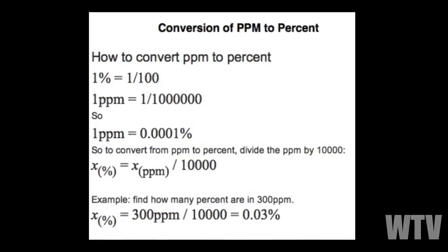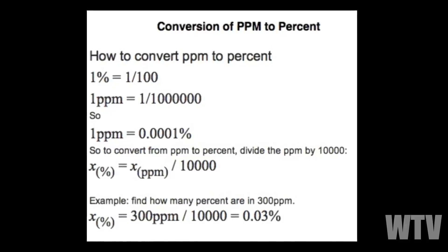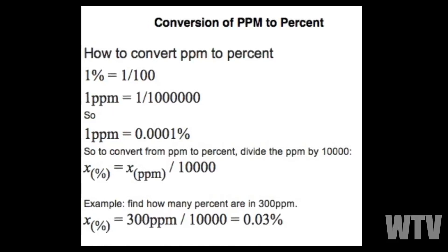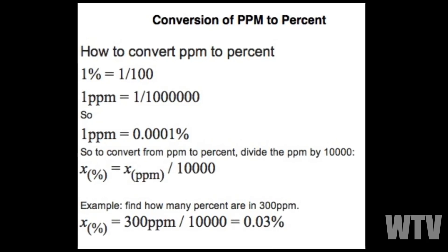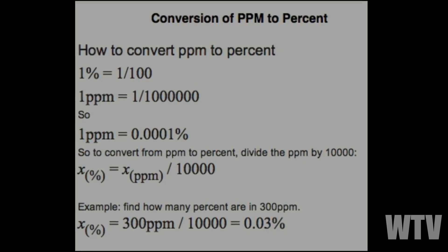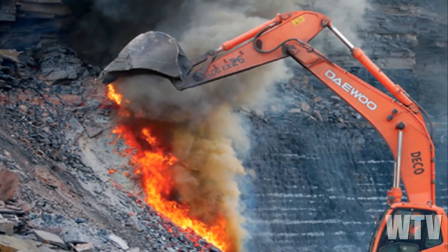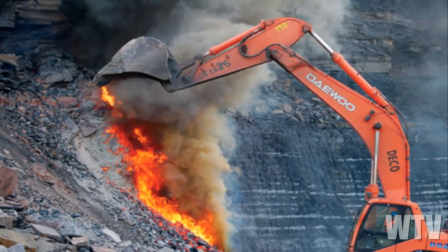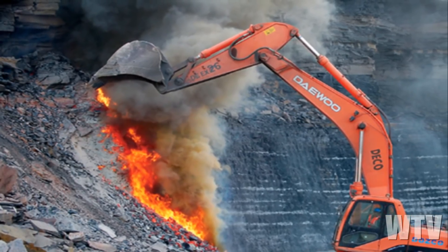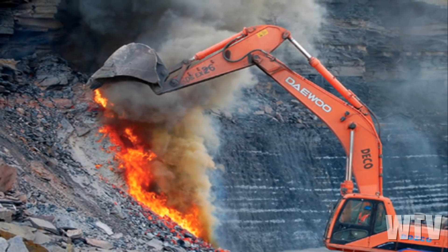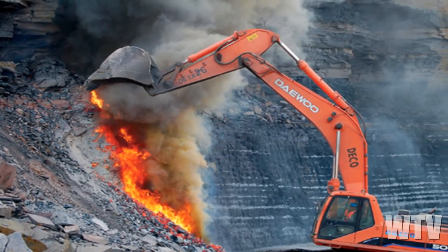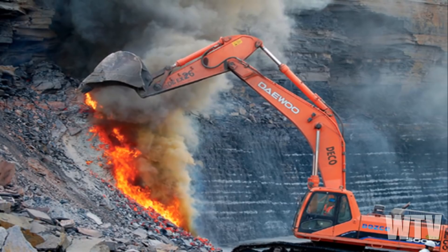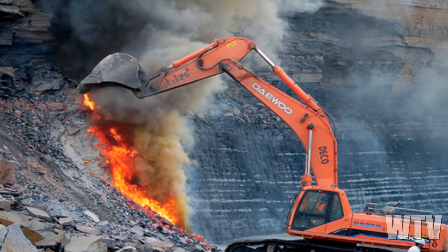The reason they use parts per million is because the number sounds big. To get the percentage, you take the PPM and multiply it by 0.0001. So from 1950 it's 0.03105%, and it increased to 0.041496%, for a total increase of 0.010446%.